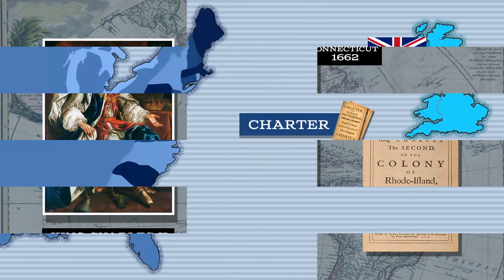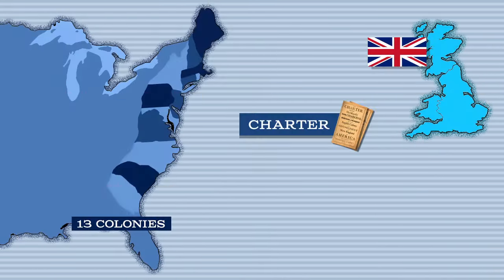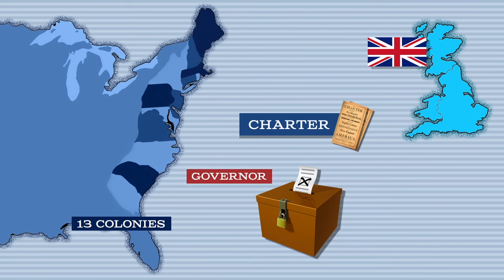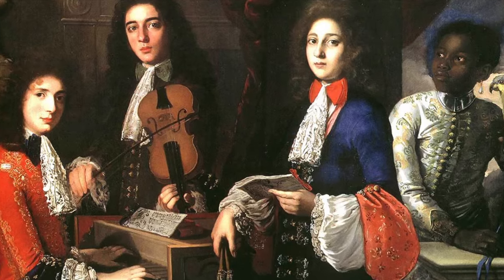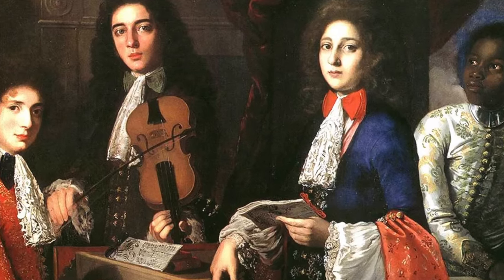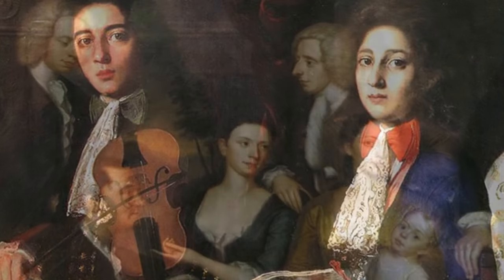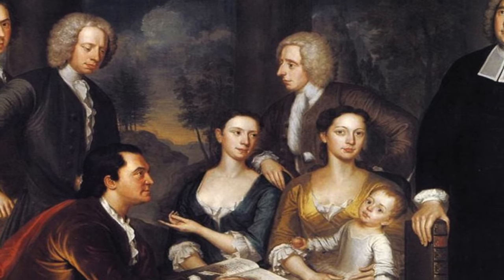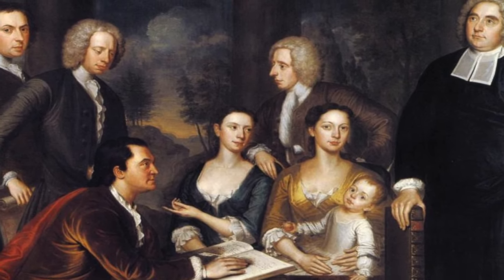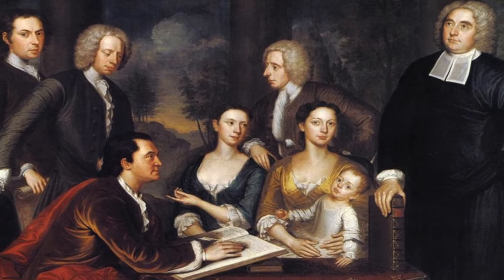The colonists in charter colonies had the right to elect their governors and both houses. Because charter colonies were governed by the citizens of the colony, they were less subject to British rule and enjoyed many more liberties than colonists in royal or proprietary colonies.